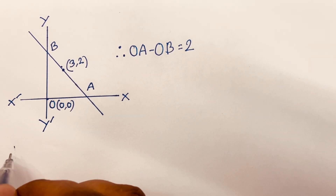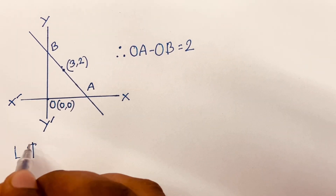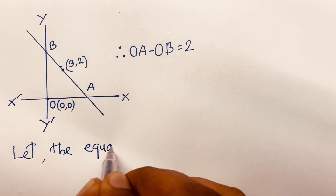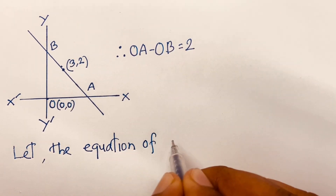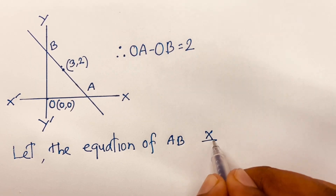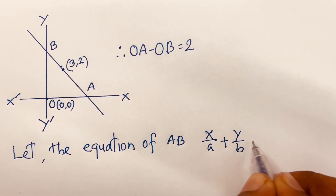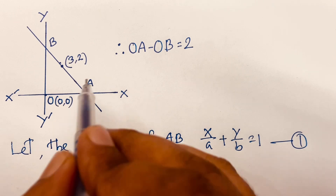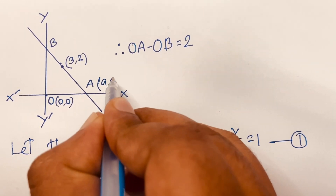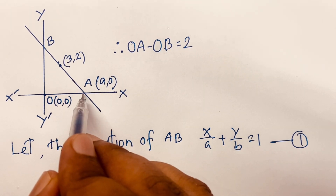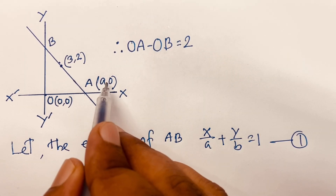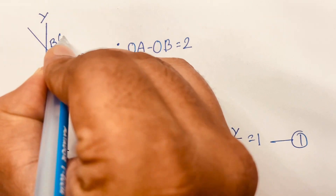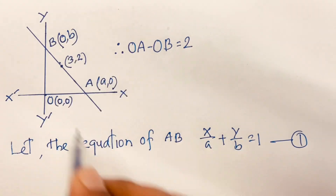First of all, let the equation of AV be x/a + y/b = 1. This point is A(a, 0) — because of that here is x over a — and this point is (0, b) — because of that y over b.